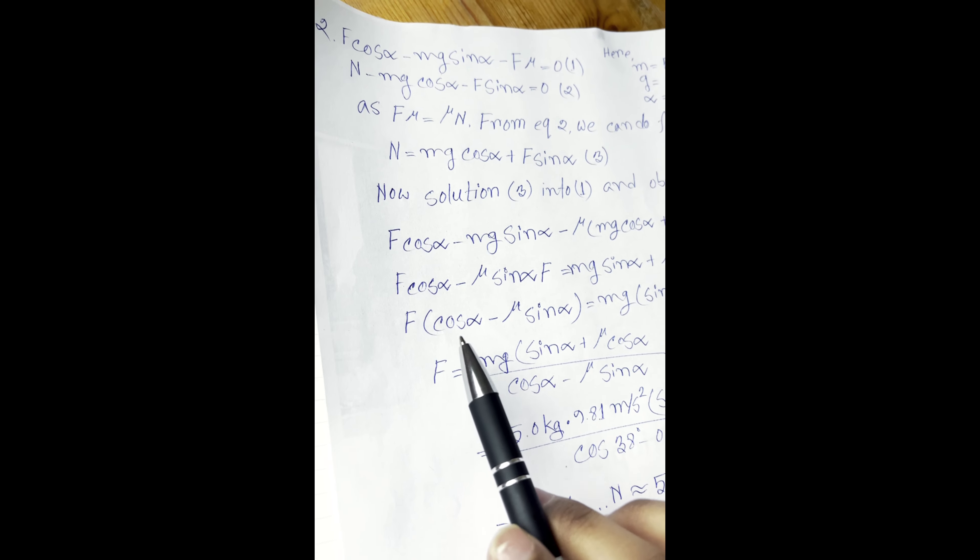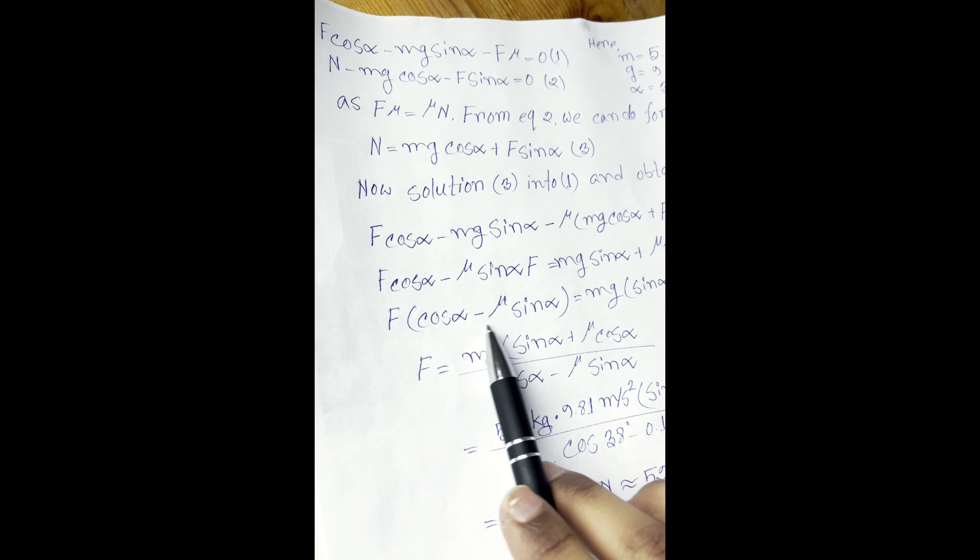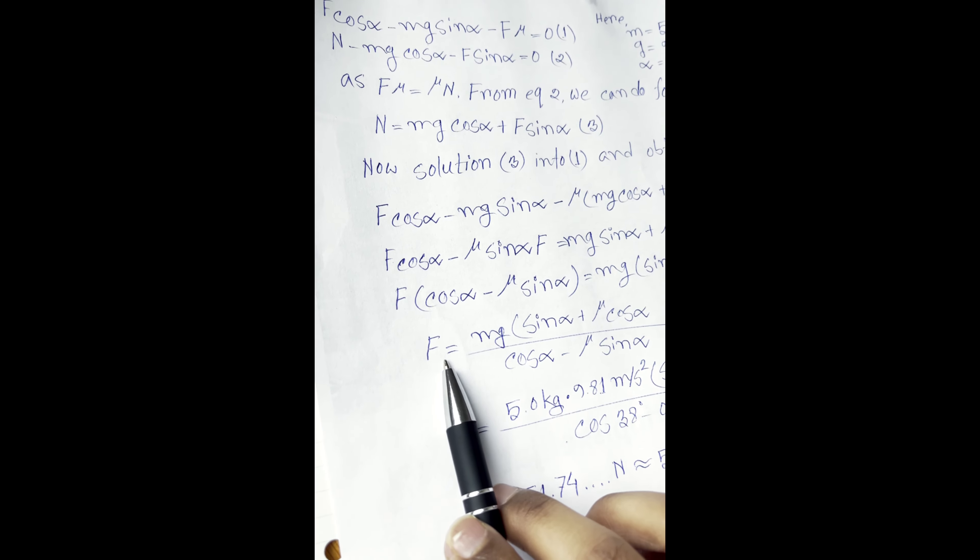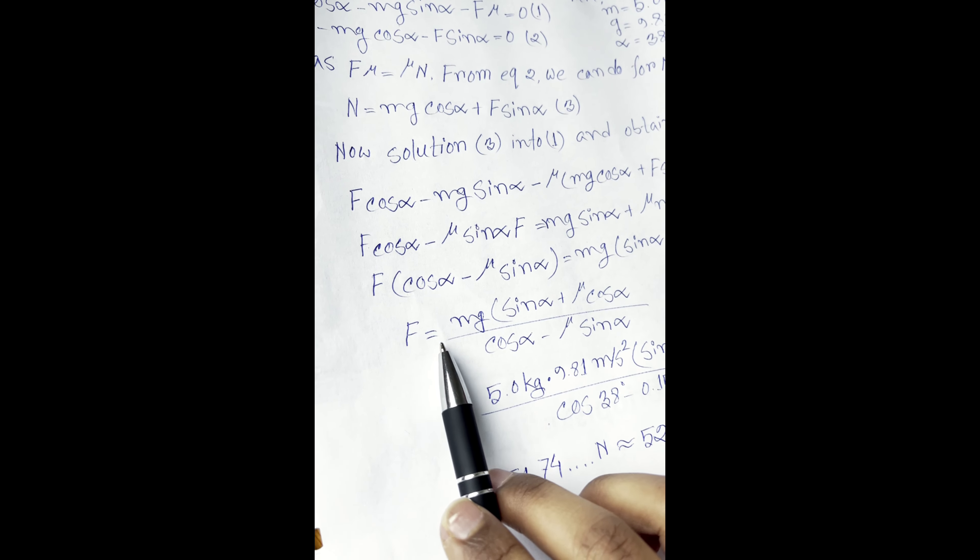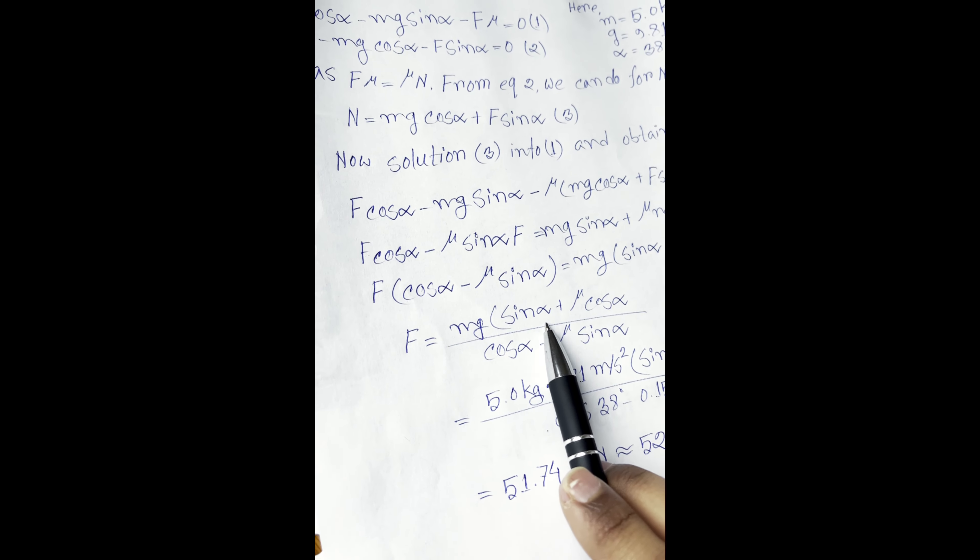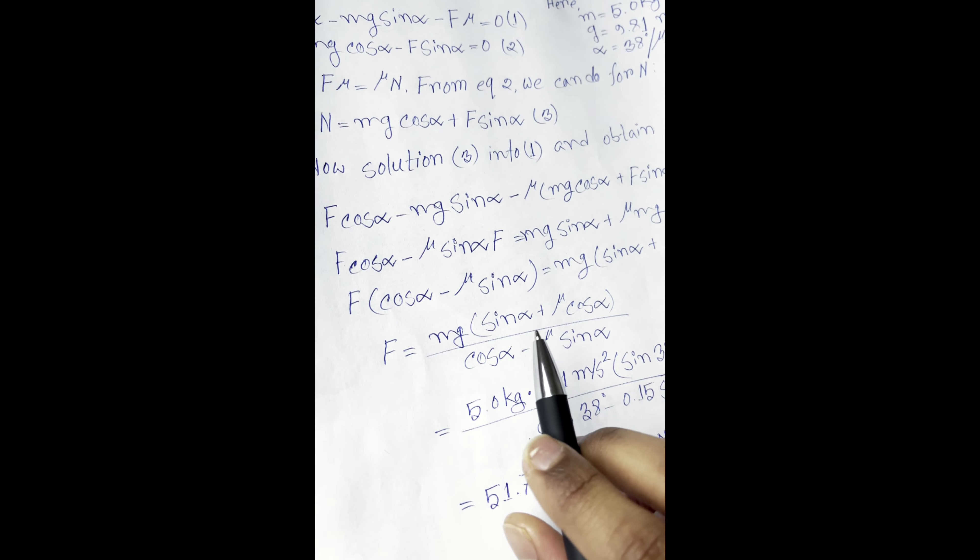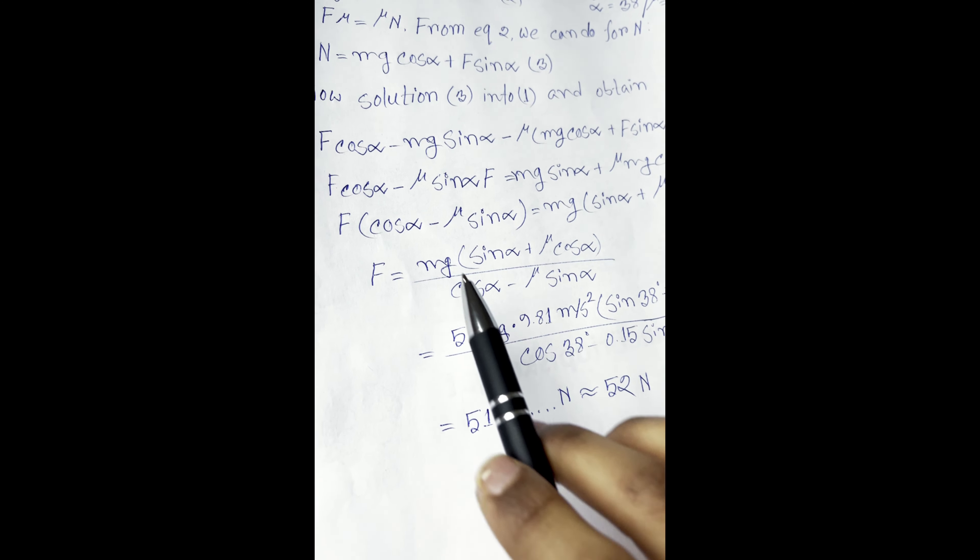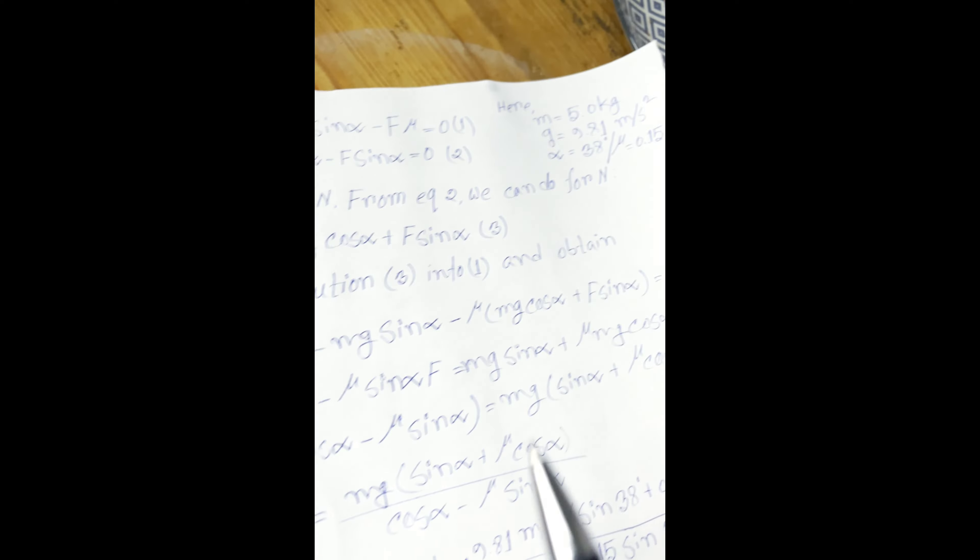From this line we take F as a common and we figure the equation. After that, if I do the summation, F equal to mg times sine θ plus mu cos θ divided by cos θ minus mu sin θ.